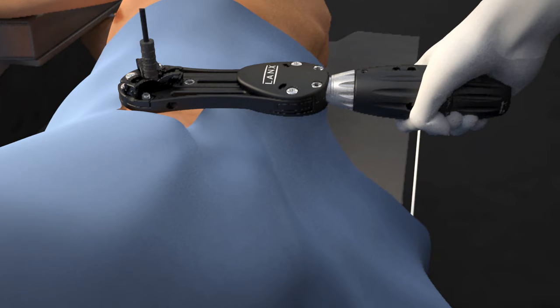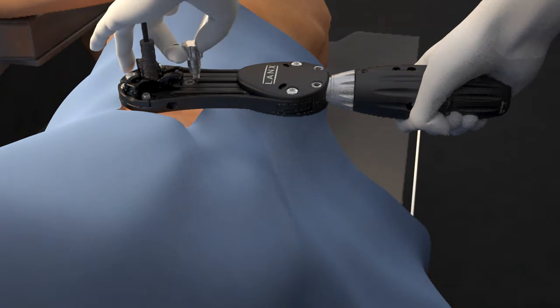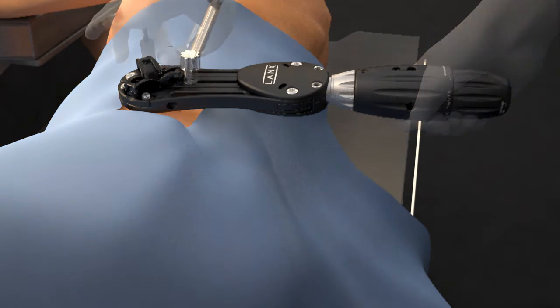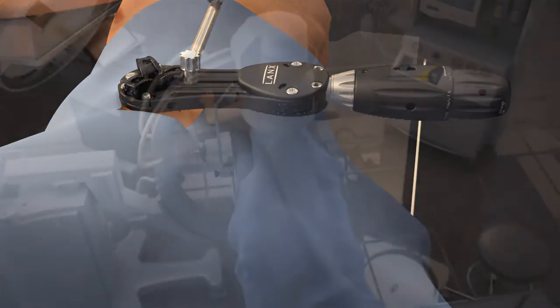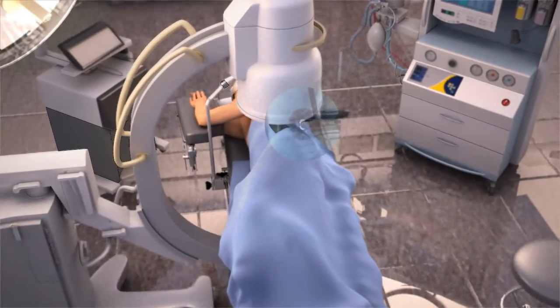Orient the retractor such that it is in line with the disc space and parallel to the floor. While maintaining downward pressure on the retractor, attach the articulating arm. Attachment to the center arm will allow for anterior retraction, while attachment to the retractor body will allow for posterior retraction.